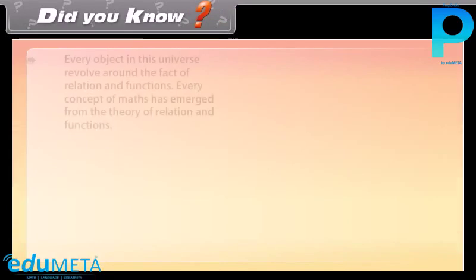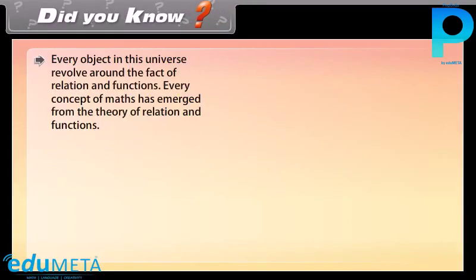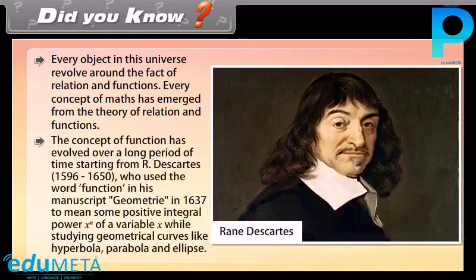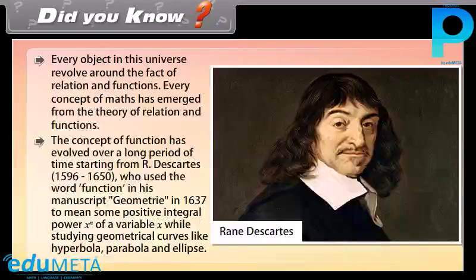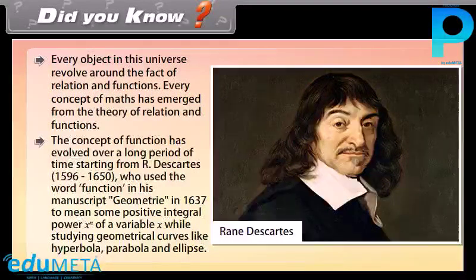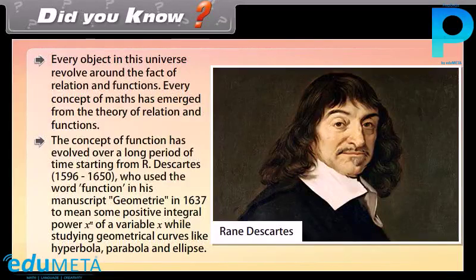Did you know? Every object in this universe revolves around the fact of relation and functions. Every concept of math has emerged from the theory of relation and functions. The concept of function has evolved over a long period of time, starting from R. Descartes (1596–1650), who used the word 'function' in his manuscript Geometry in 1637, to mean some positive integral power xⁿ of a variable x while studying geometrical curves like hyperbola, parabola, and ellipse.